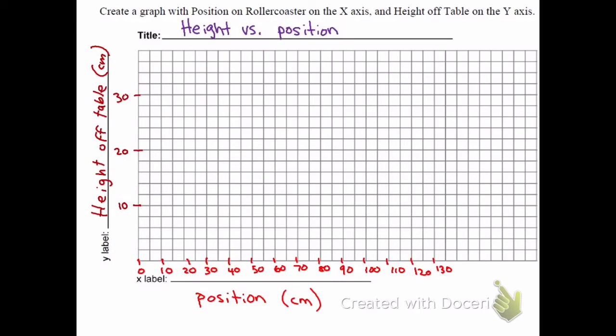And your heights were not much over 30 centimeters. So what I did was I counted by twos. So this would be 0, 2, 4, 6, 8, 10, 12, 14, 16, 18, 20, and so forth. Then you're going to plug in your data points, and you should get a graph.